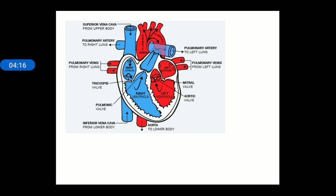From the right atrium the blood moves to the right ventricle. In the right ventricle the blood is deoxygenated — oxygen needs to be added. So through the right ventricle, this deoxygenated blood will move towards the lungs — the right lung and the left lung — with the help of a structure known as the pulmonary artery.